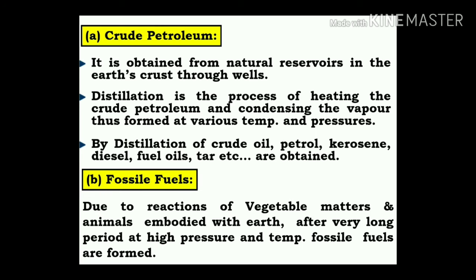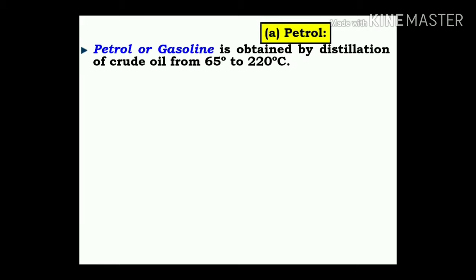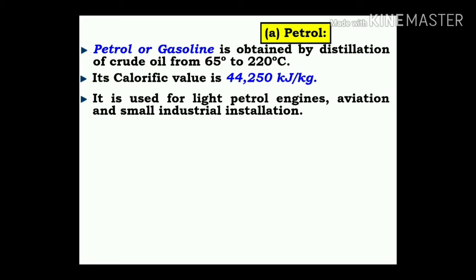Fossil fuels are formed due to the reaction of vegetable matter and animal remains embedded in the earth after a very long period at high pressure and temperature. Petrol or gasoline is obtained by distillation of crude oil from 65°C to 220°C. Its calorific value is around 44,250 kJ/kg. It is used for light petrol engines, aviation, and small industrial installations.